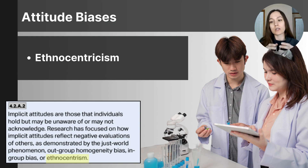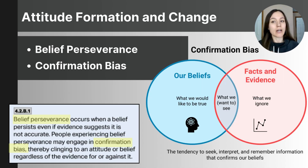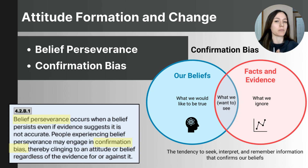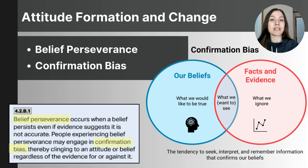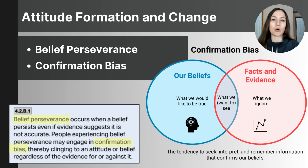We can also be unaware of our tendency to cling to our established beliefs even when presented with evidence that proves them false. Two related terms are belief perseverance and confirmation bias. Belief perseverance refers to our tendency to cling to our beliefs even when presented with contradicting evidence. Confirmation bias refers to our tendency to seek out information that supports our existing beliefs while ignoring information that challenges them. These cognitive biases help explain why people hold on to prejudices or stereotypes without critically evaluating new or opposing information.